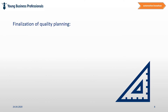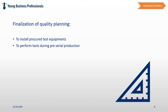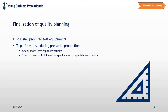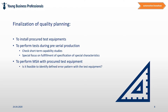Finalization of quality planning. Within project Phase 4, the quality planning process will be closed and all planned test equipment and methods will be applied. Procured test equipment is installed and first tests are performed during the pre-serial production. Short-term capability studies can be performed, with a special focus on fulfillment of special characteristics. In addition, the measurement system analysis can be started for new test equipment. The target is to check if identified error patterns can be correctly identified with procured test equipment. Furthermore, the control plan is being finalized for the level of serial production.